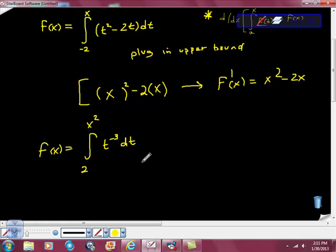I'm going to use the fundamental theorem of calculus. Again, I'm going to do just what I said. I'm going to plug the upper bound into the equation there. It's going to look like this to the negative third power. That's x squared, isn't it?